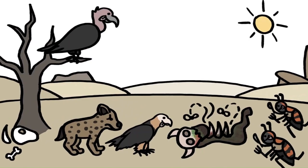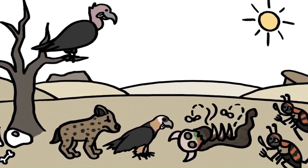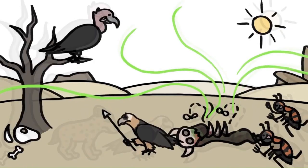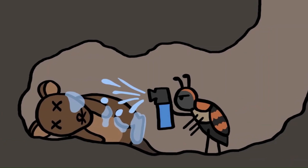But sometimes severely rotten flesh is the only item on the menu. And some scavengers, such as burying beetles and vultures, actually seek out putrid carrion because it's easier to detect, dig into, and defend.